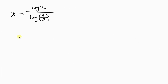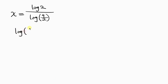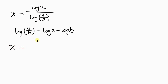We now apply the logarithm property to the denominator: log of a over b equals log a minus log b. So the denominator log of 9 over 2 becomes log 9 minus log 2, giving us x equal to log 2 over log 9 minus log 2.